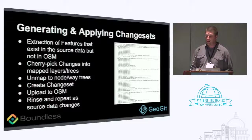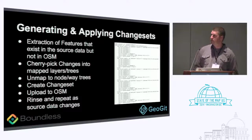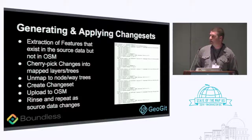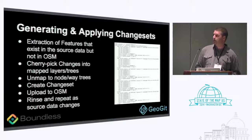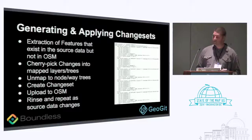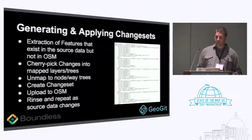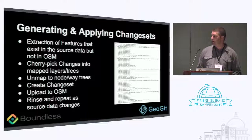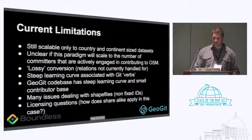Generating and applying change sets works more or less like this: you extract features that exist in the source data but not in OSM, cherry-pick those changes into the map layers, un-map them back to node and way trees, create a change set, upload it to OSM, and then rinse and repeat when the source data changes. That's really the key — currently there are very few, if any, examples of people updating imports over time, even though it's always talked about.